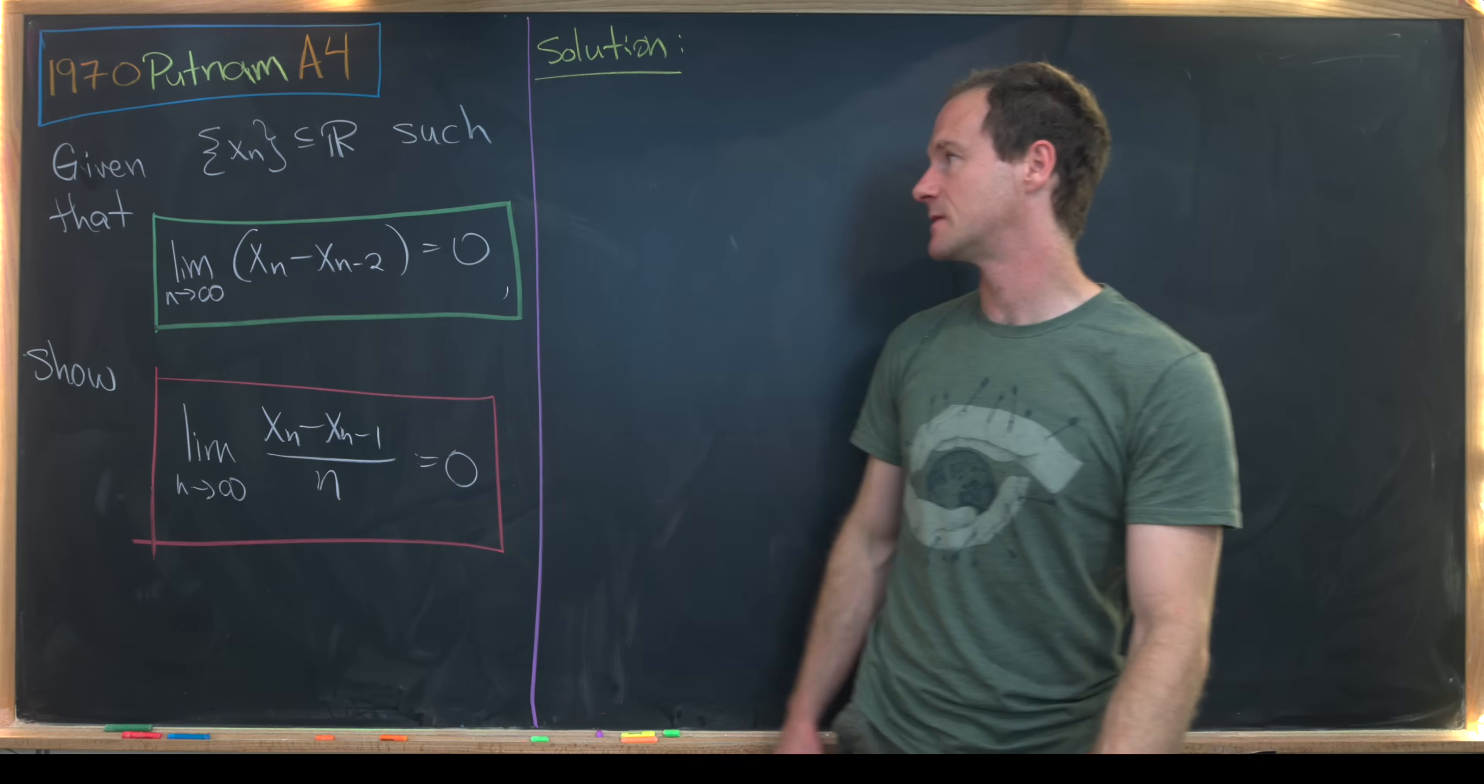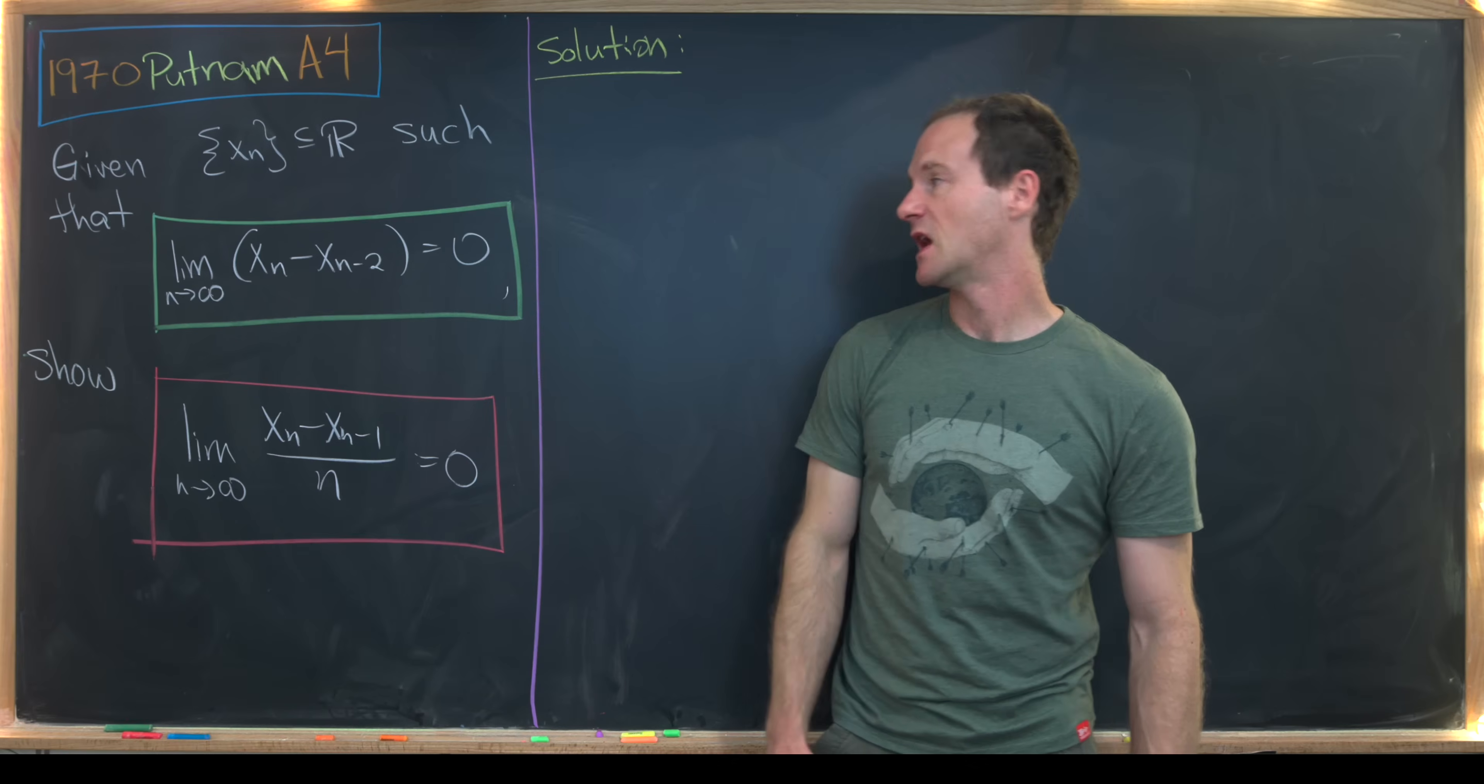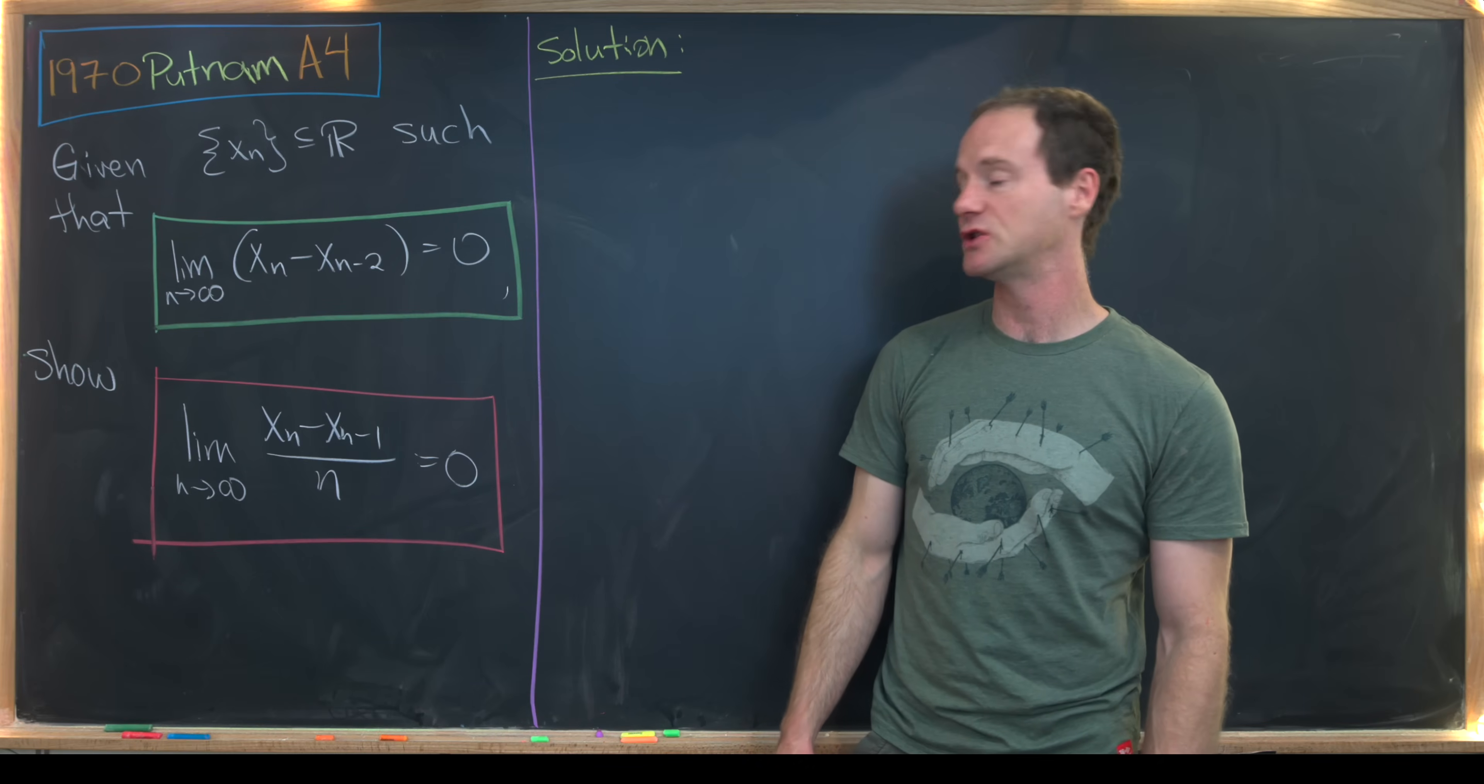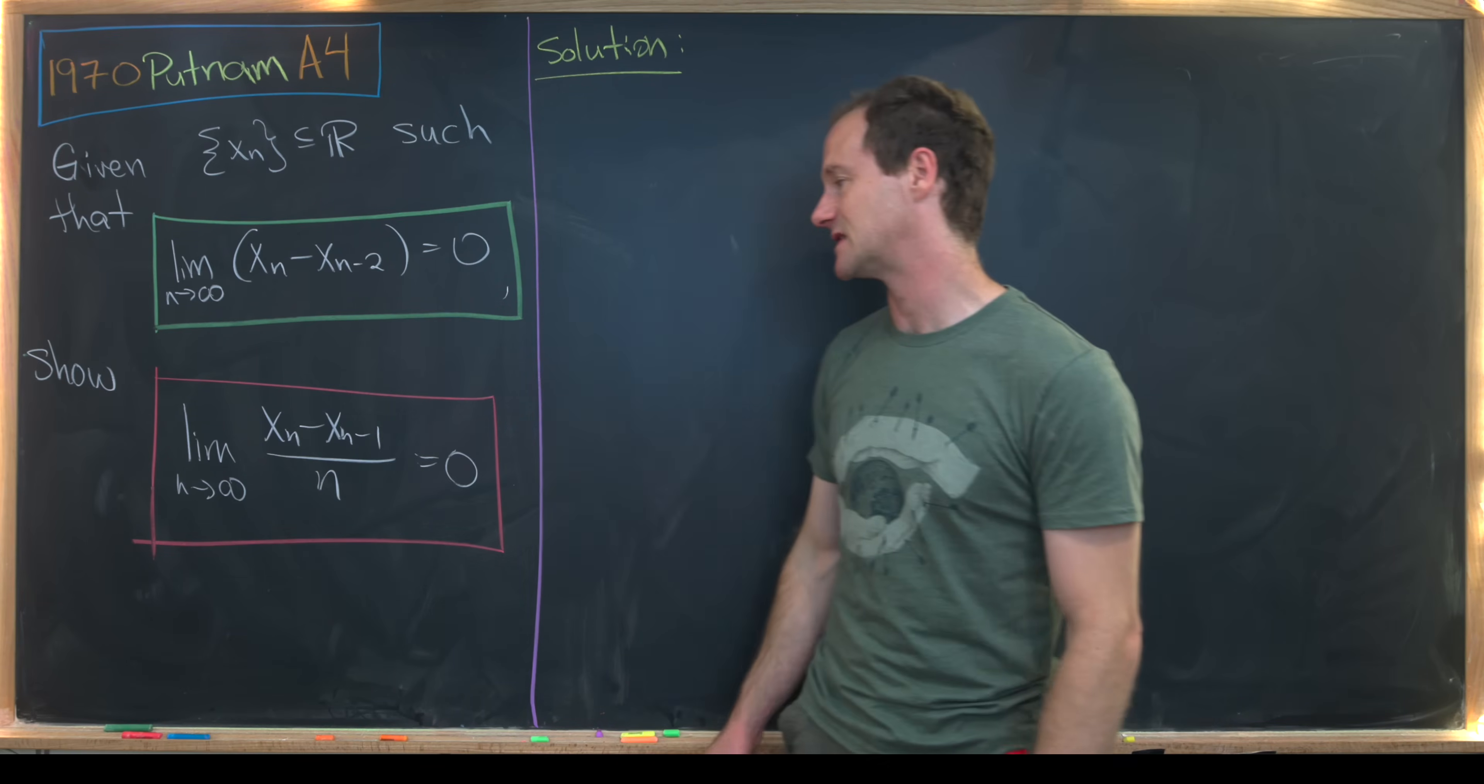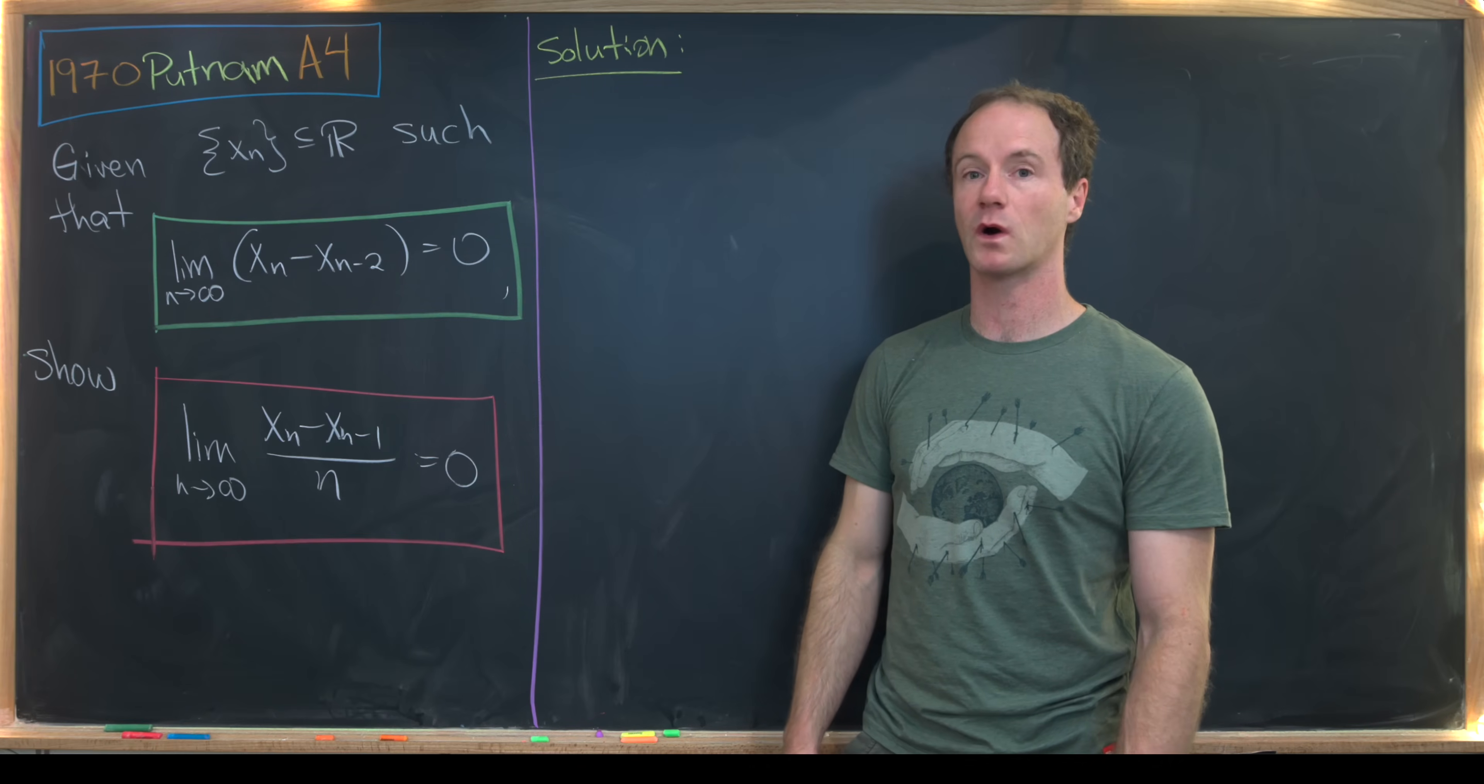So let's look at the statement. We've got a sequence of numbers xn, n goes from 1 to infinity, real numbers that satisfy the following limit. The limit as n goes to infinity of xn minus xn minus 2 equals 0. And what we want to do is show that the limit as n goes to infinity of xn minus xn minus 1 over n equals 0. So I think this is pretty interesting. It's kind of obvious that this should imply this, but it actually takes a little bit of work as we'll see.